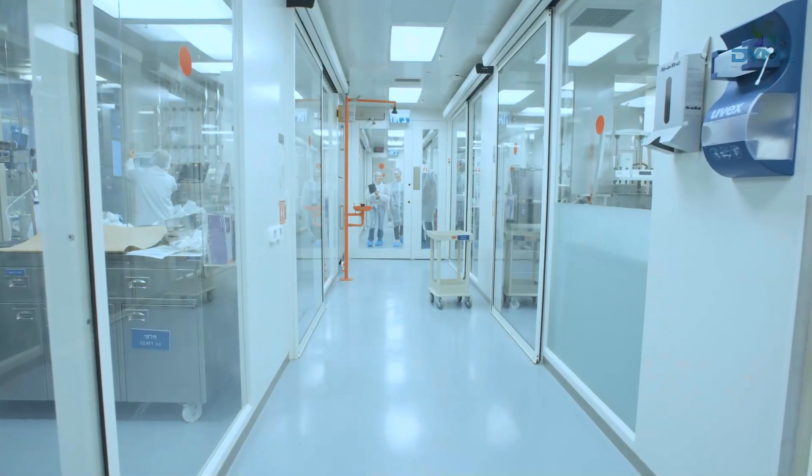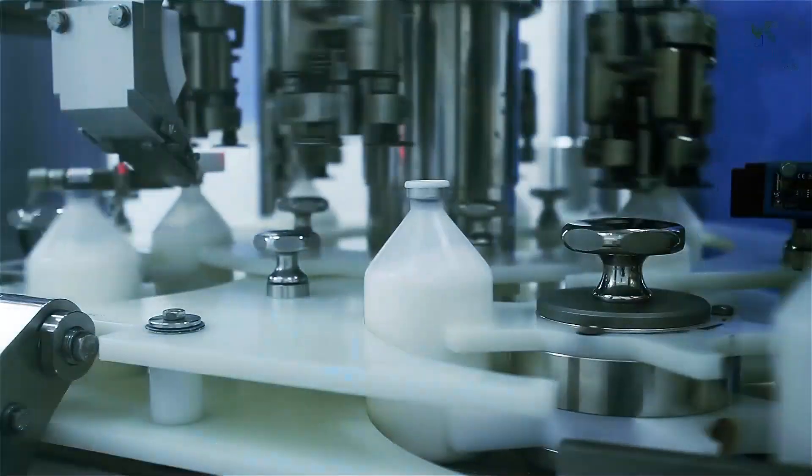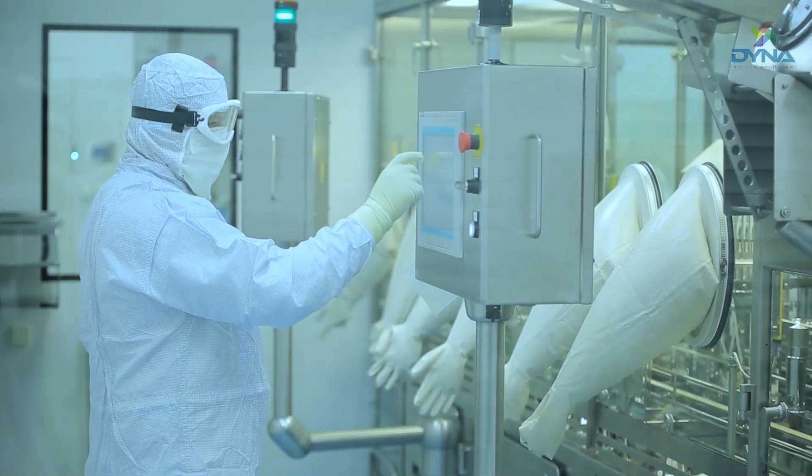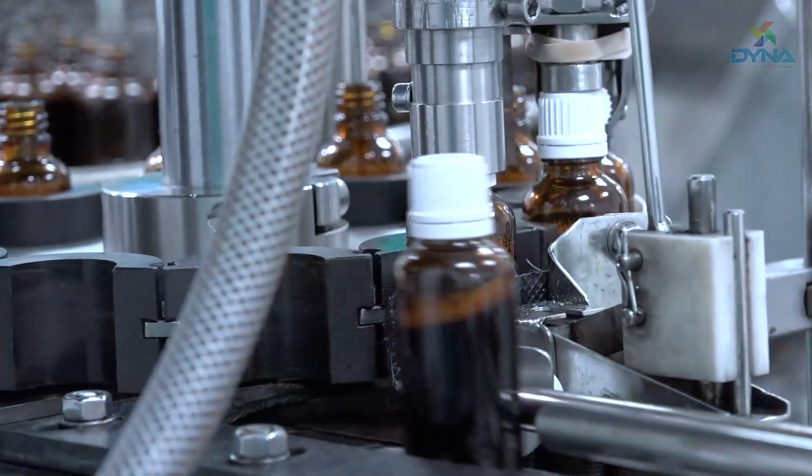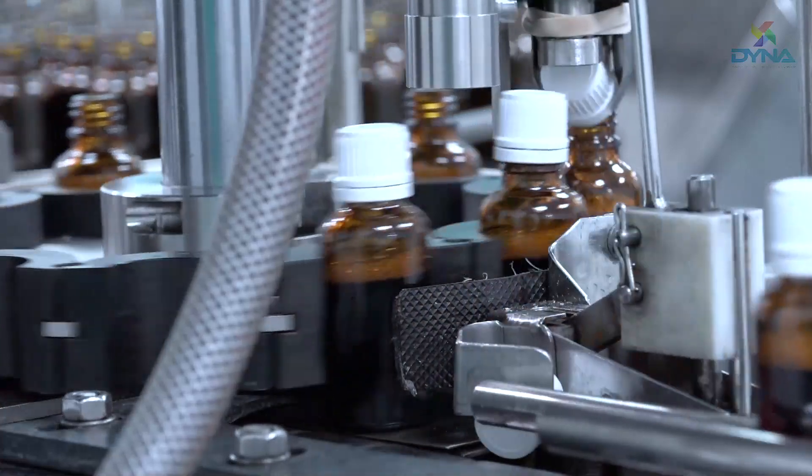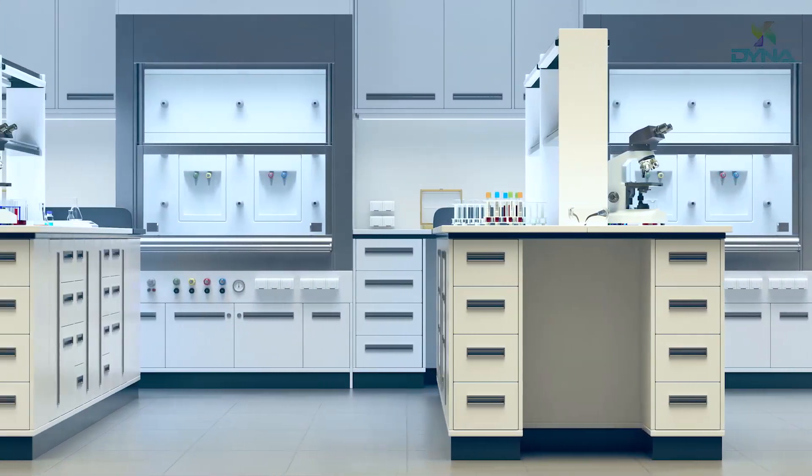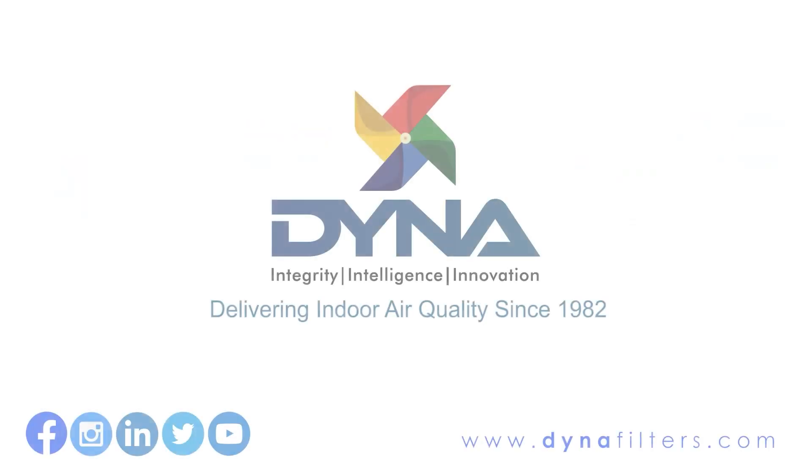DINAA's bag-in-bag-out systems are used in contaminated potent air exhaust systems at facilities such as HP API, steroids, hormones, biosafety level 2, biosafety level 3, and biosafety level 4 facilities.